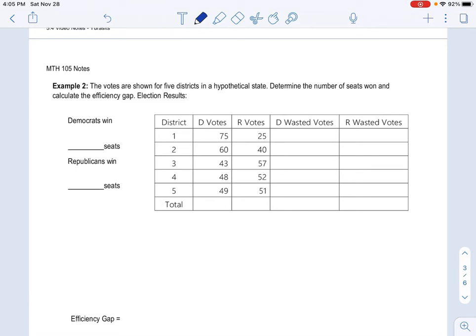So the first thing we need to figure out is how many votes is each district getting. So if we just look here, that totals to 100, that totals to 100, that totals to 100, totals to 100, totals to 100.